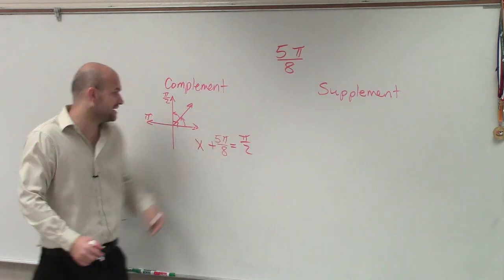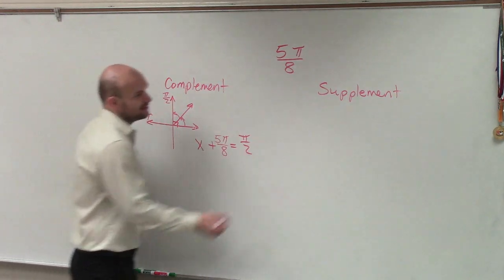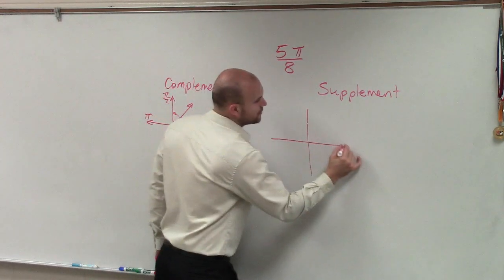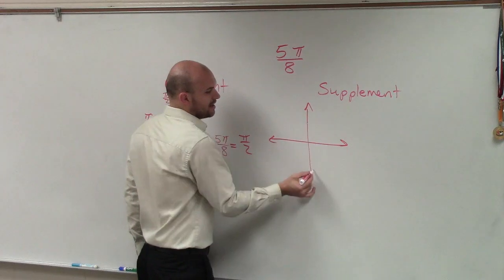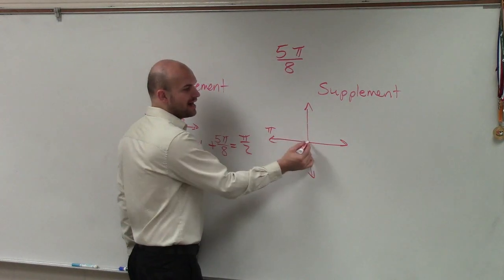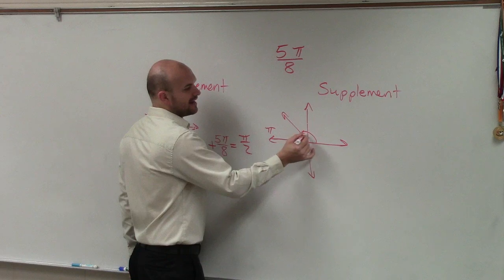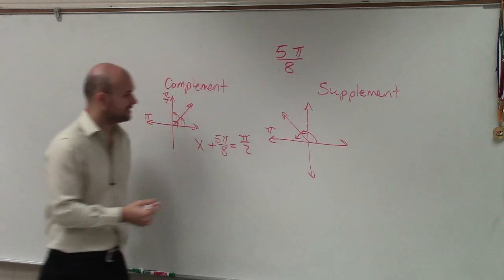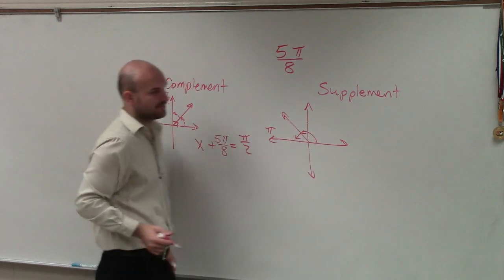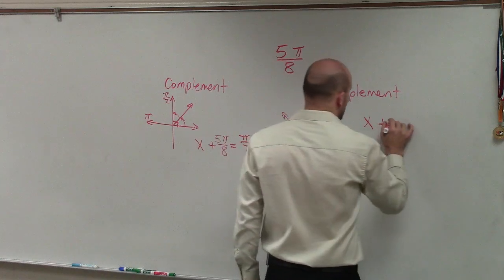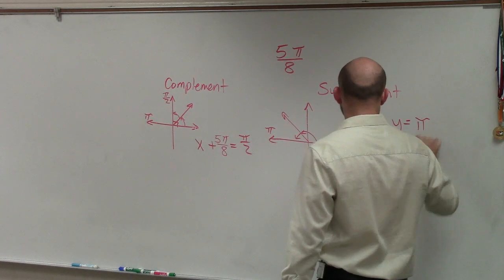Then what the supplement says is find two angles that add up to give you 180 degrees. And remember, the radian measure of 180 degrees is π. So we want to find two angles that add up to 180 degrees. But remember, since we're talking about radians today, or for this problem, it's going to be equal to π.